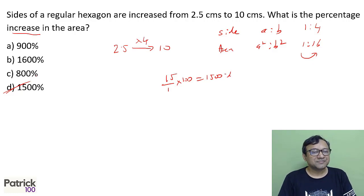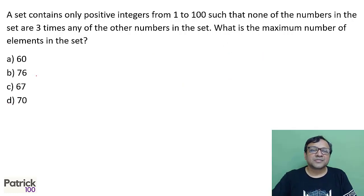The set contains only positive integers from 1 to 100 such that none of the numbers in the set are 3 times any of the other numbers. What is the maximum number of elements in the set? So none of them are 3 times. If I remove all the multiples of 3, so I am removing 33 numbers. So 67 numbers will be there.